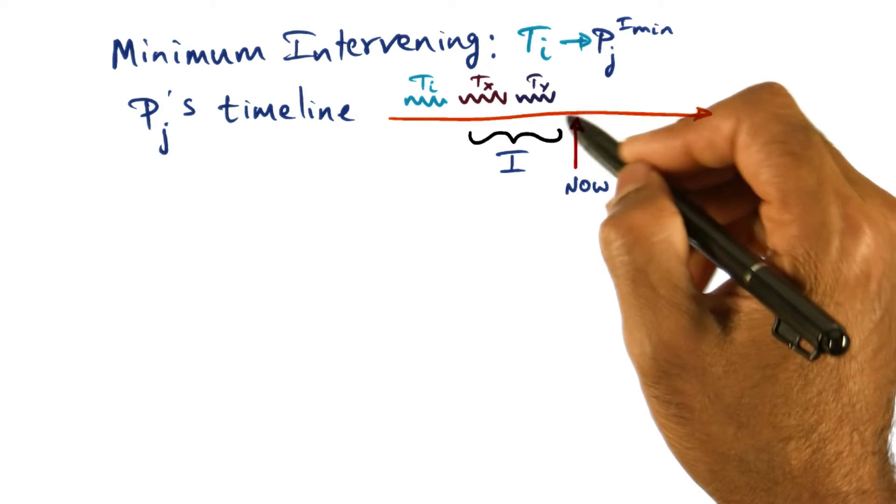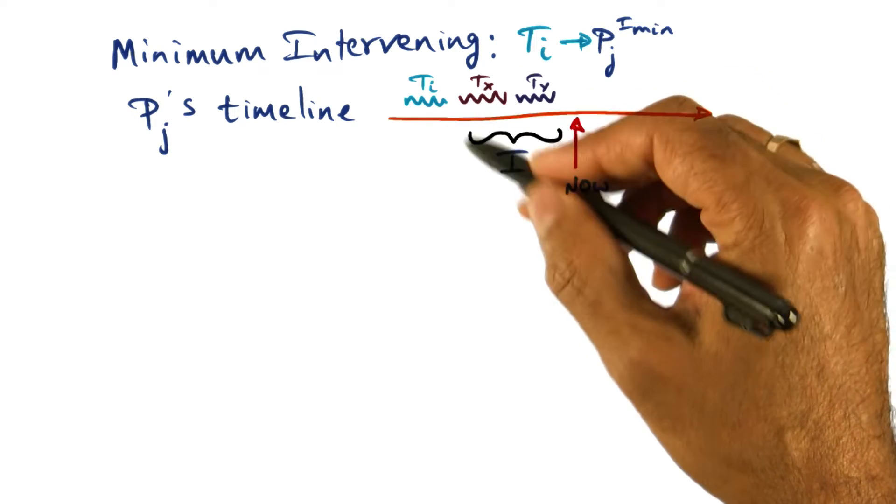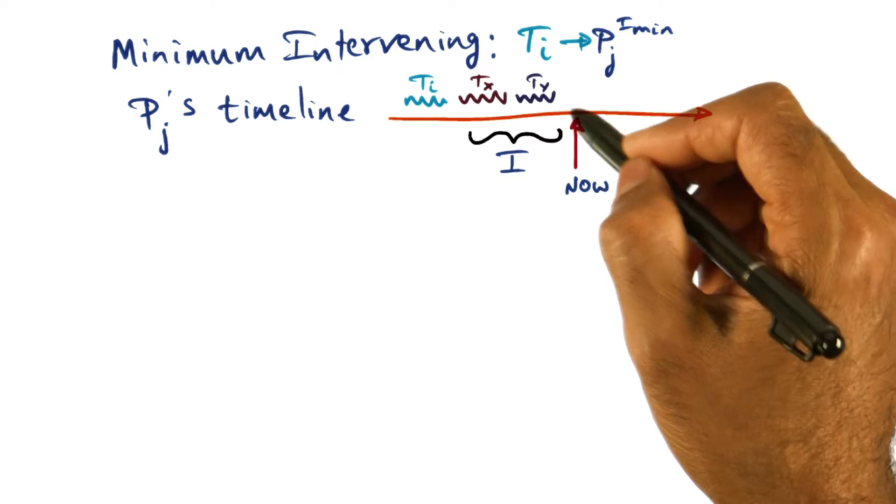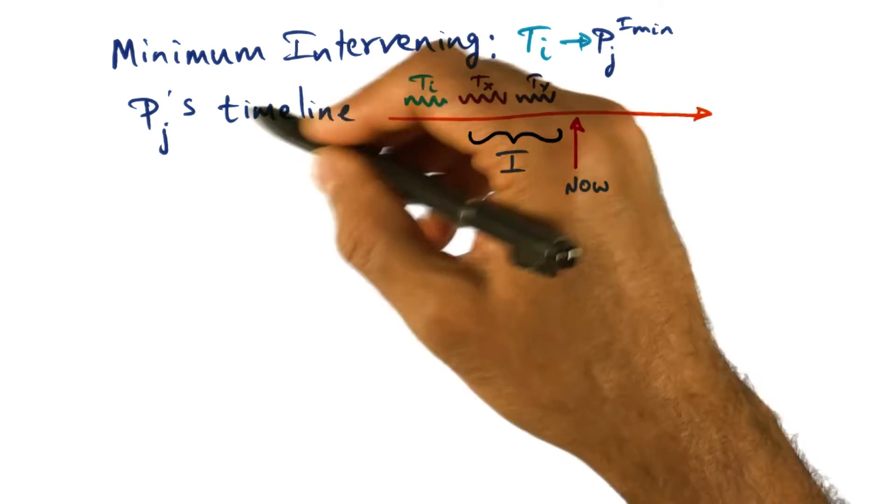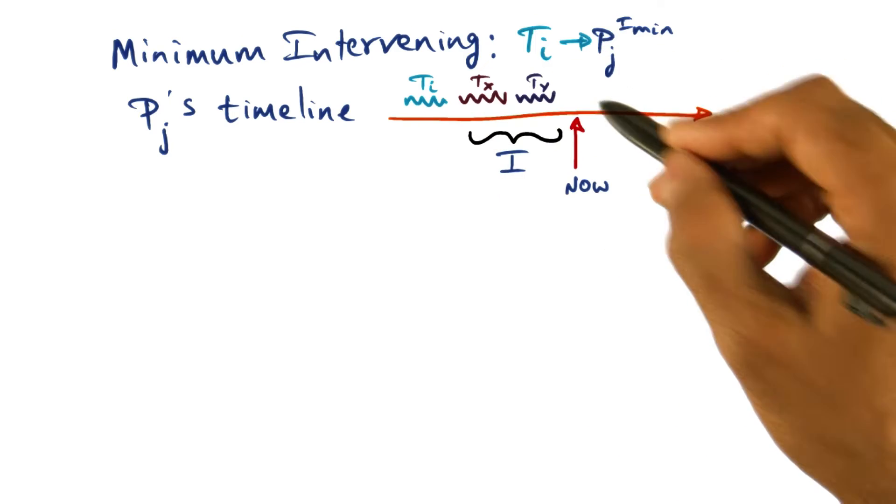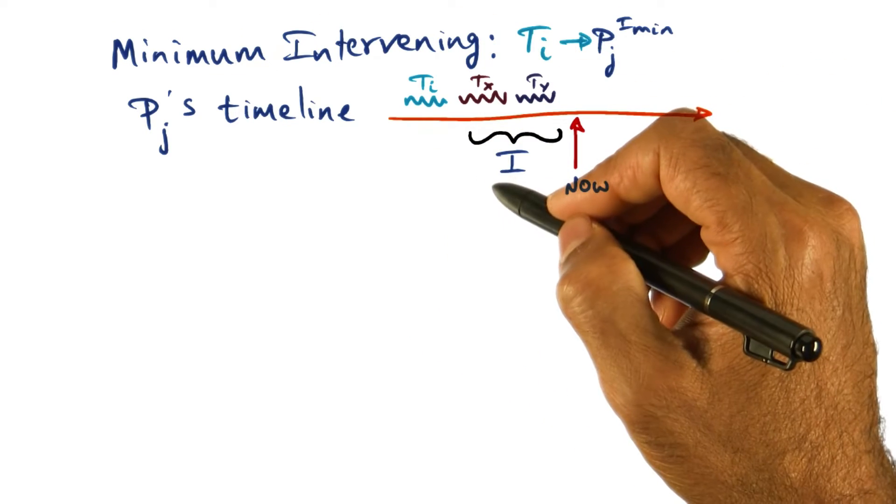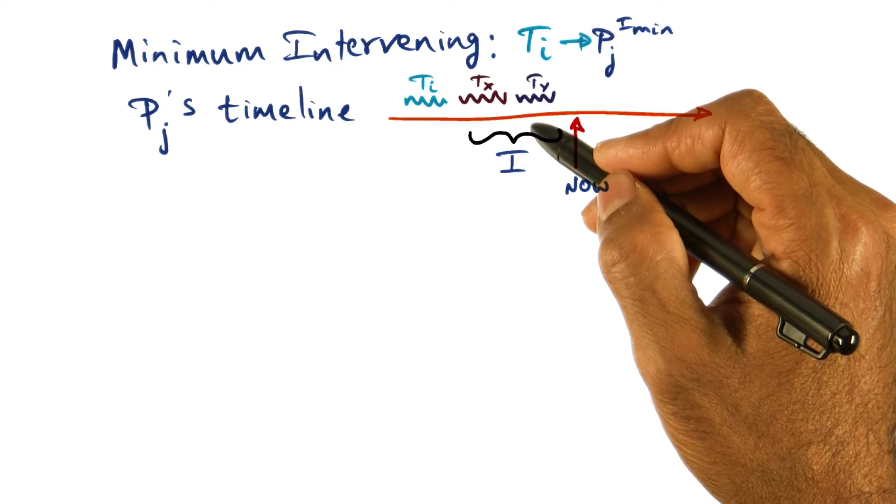So when we say the affinity number is 2, it means there are two intervening threads that ran on PJ between the time TI got dibs on PJ now at this point of time and at this point of time. That's the idea behind this affinity index.